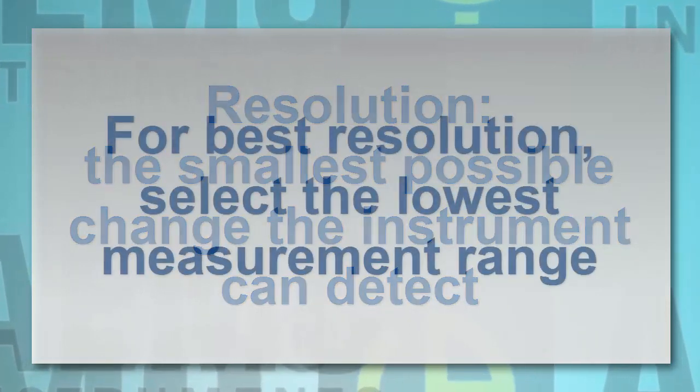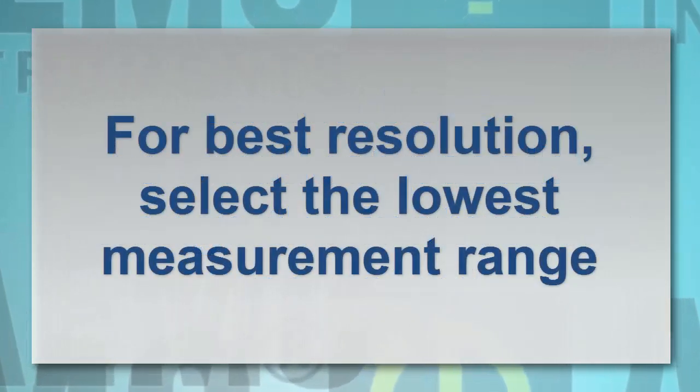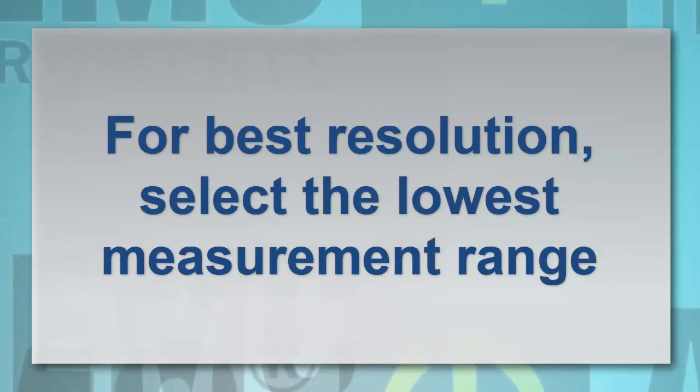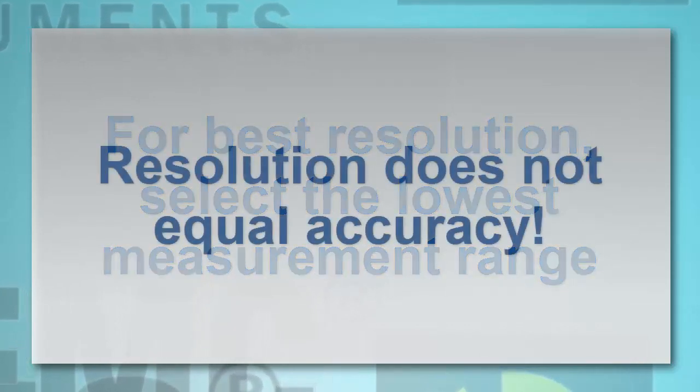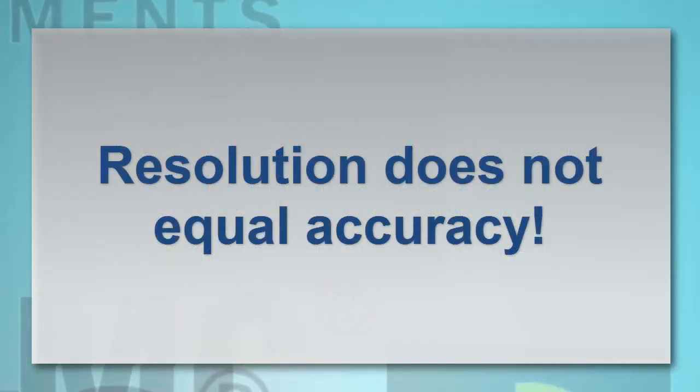And since resolution depends on the size of each unit, the smaller the better, the lowest possible measurement range should be selected when making high-resolution ratings. However, these numbers say nothing about an instrument's accuracy. The one-thousand-count digital multimeter may have a measurement uncertainty much smaller than the ten-thousand-count model, and therefore produces more accurate readings. Although resolution is a critical factor in calculating uncertainty, it is not the sole factor.